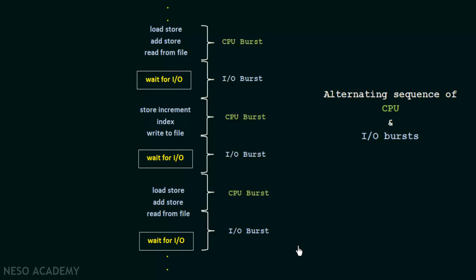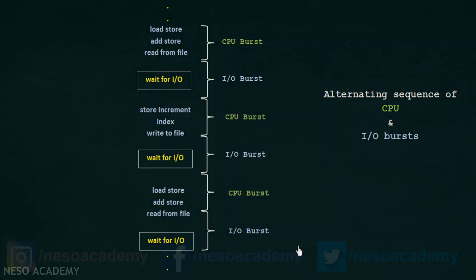As we continue studying about CPU scheduling, CPU burst and IO burst are two important things to always keep in mind. Whenever we use these terms you should remember what they mean as studied in this lecture. I hope this lecture about CPU burst and IO burst and CPU and IO burst cycles was clear to you. Thank you for watching and see you in the next one.